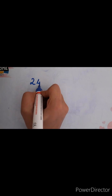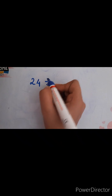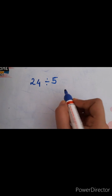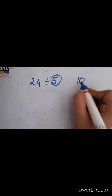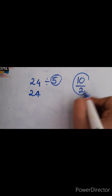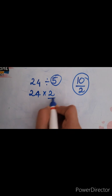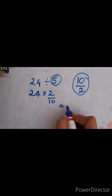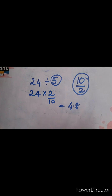Next: 24 divided by 5. This is a very simple one. Take 5 as 10 by 2. Then take the reciprocal: 24 into 2 by 10, which is 48 by 10. That gives you 4.8. So you can use this method to find the answer.